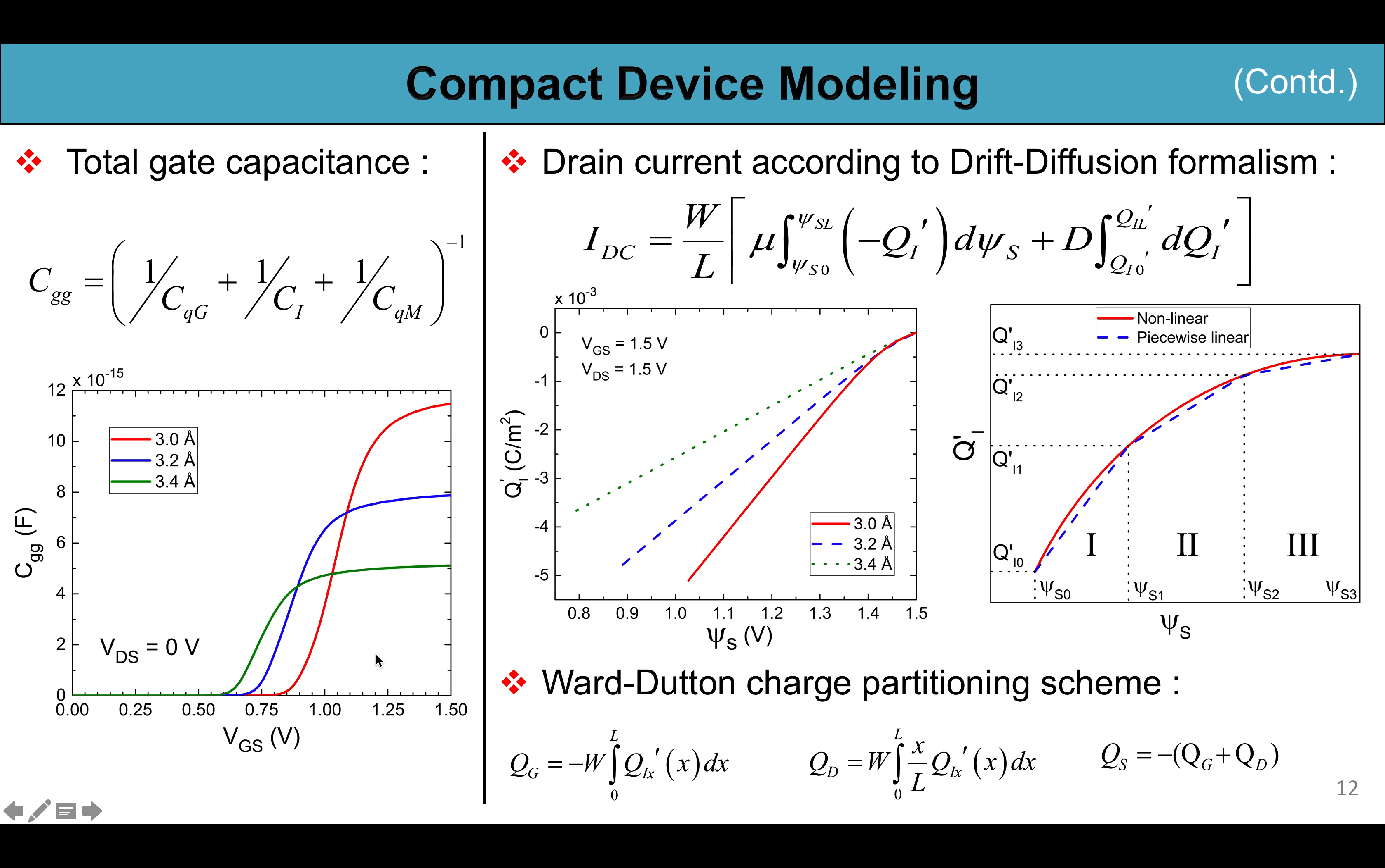Now the drain current according to the drift diffusion formalism becomes idc equal to this equation as shown in the slide. Here the mobility mu and D is the bias dependent diffusivity. For conventional MOSFETs for a given bias QI' changes quasi linearly with psi s along the channel, and QI' is approximated as a linear function of psi s.